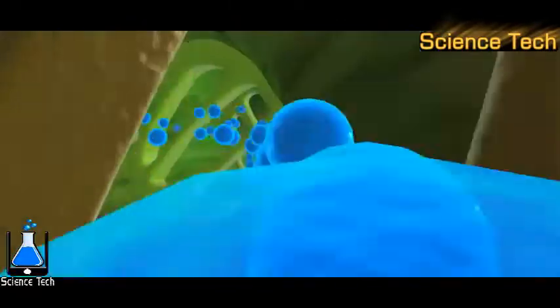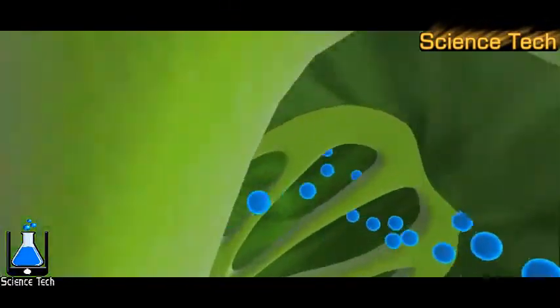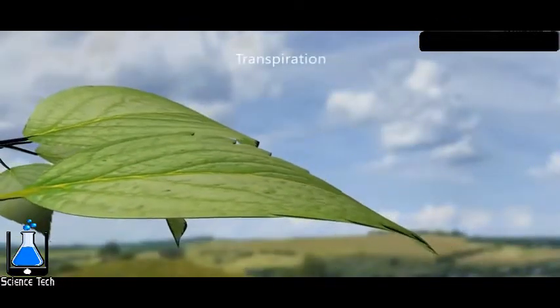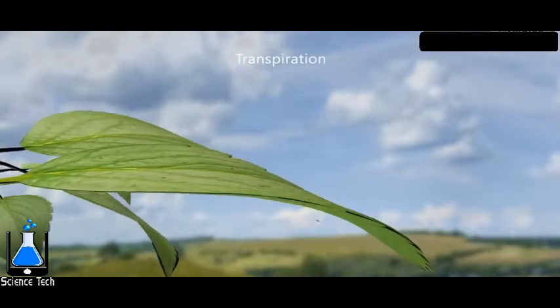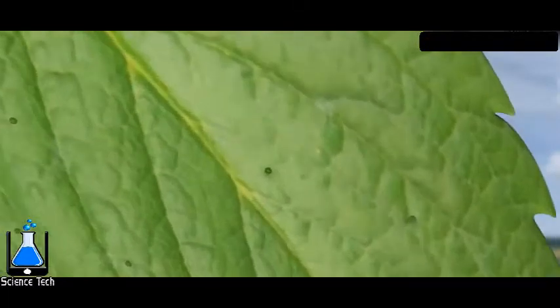About 95% of the water absorbed is lost through the stomata present in the leaves. This process is known as transpiration. The number of stomata is more on the lower surface of leaves.